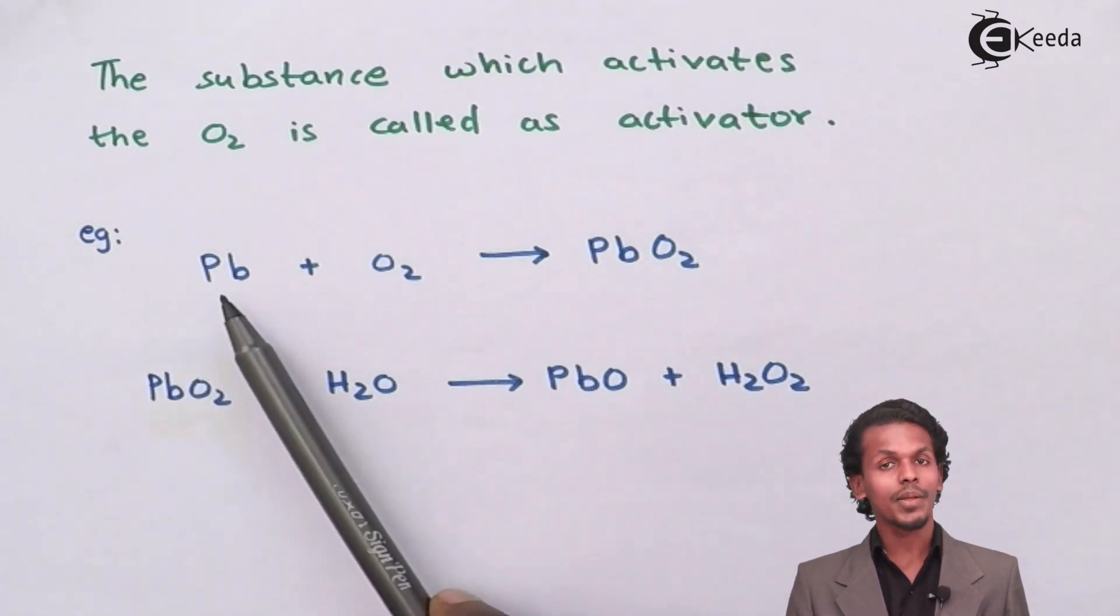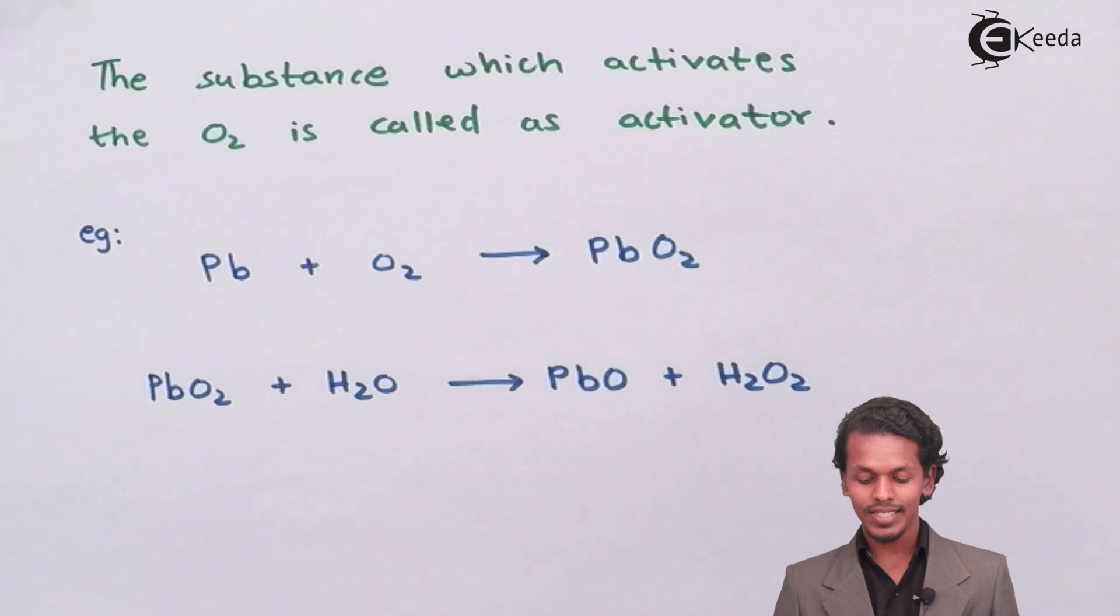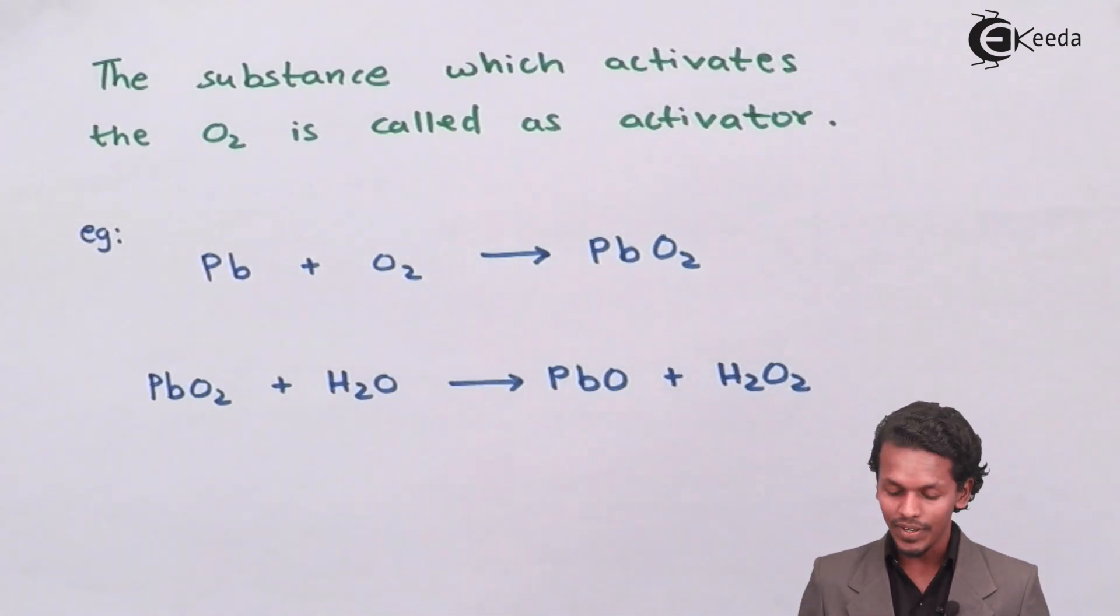So suppose in this case Pb that is lead combines with O2 and in this case O2 is nothing but the activator.